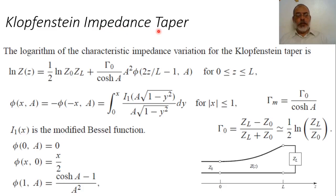Klopfenstein impedance taper. In the previous video, we started two tapered sections — the differential tapered section and the triangular tapered section — as tapered sections for matching a real load impedance to a transmission line of characteristic impedance Z-naught.